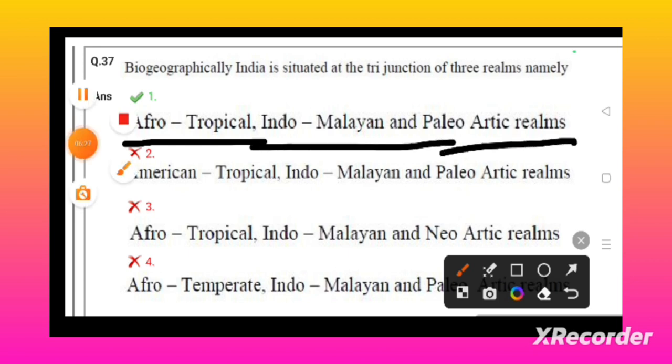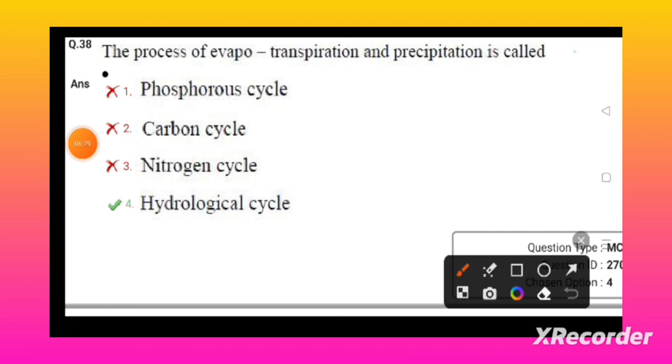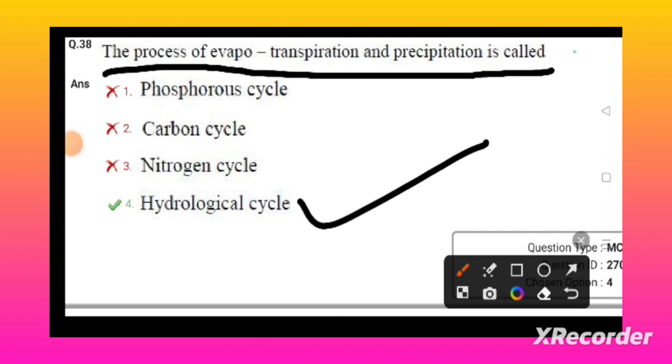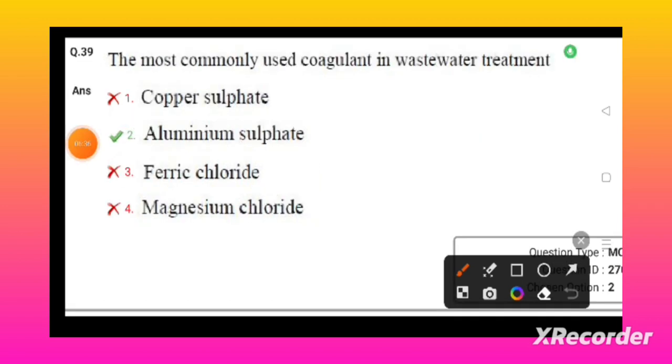The process of evapotranspiration and precipitation is called the hydrological cycle. The most commonly used coagulant in wastewater treatment is aluminum sulfate, also known as alum.